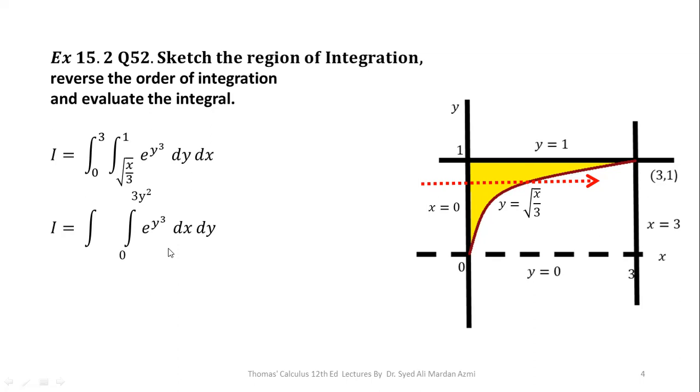After getting the limits of inner variable through arrow technique, we will calculate the limits of outer variable. For outer variable, we will always check the range of our region along that particular axis. For this region, our range along y-axis is 0 to 1. So, our outer limits are 0 to 1.